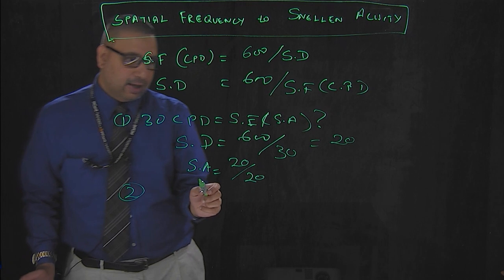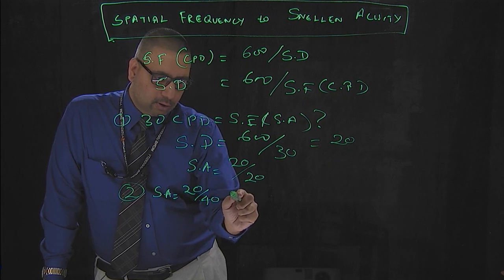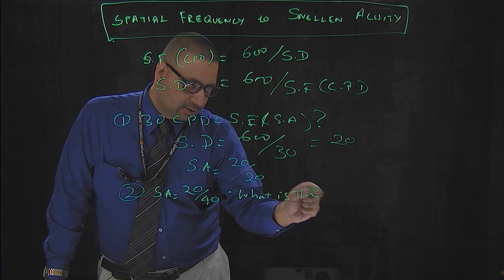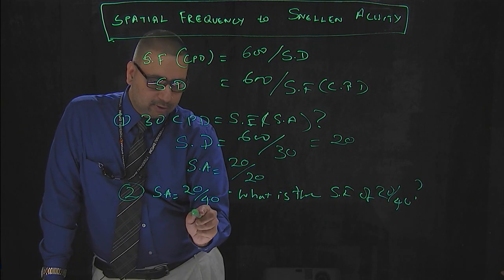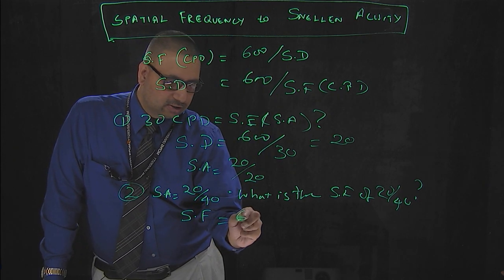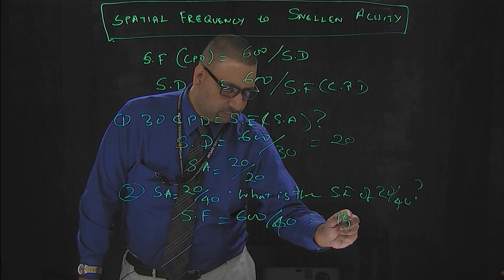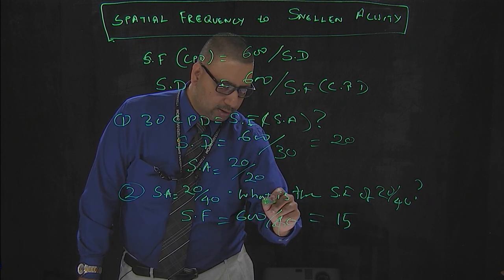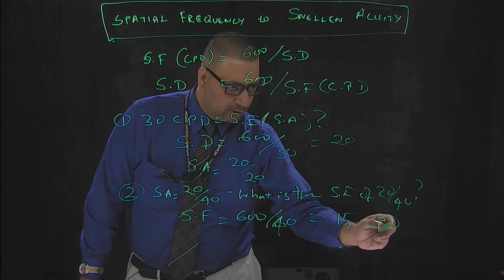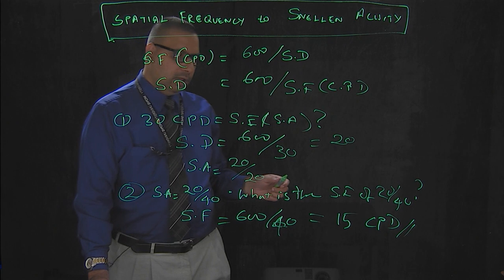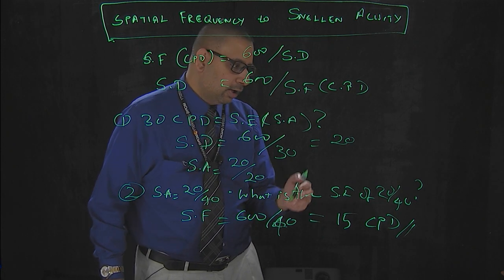Let's take another example. Say your Snellen acuity is 20/40 and you want to know the spatial frequency. Using the same formula, spatial frequency equals 600 divided by the Snellen denominator, which is 40. 600 divided by 40 gives you 15. So the spatial frequency for a Snellen acuity of 20/40 is 15 cycles per degree.